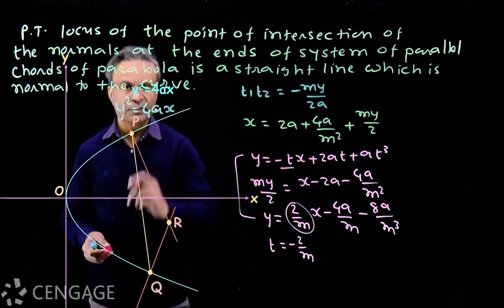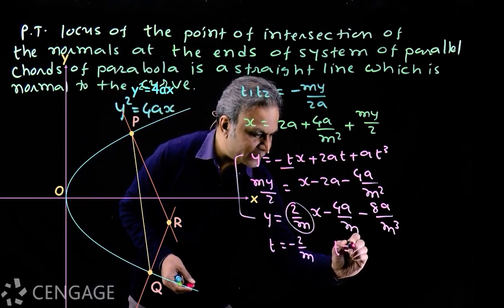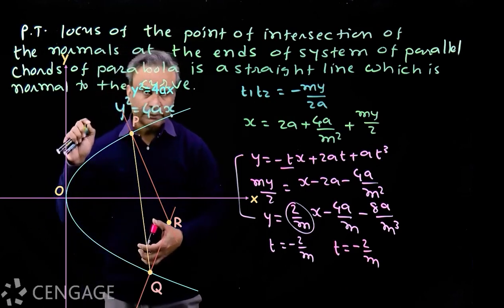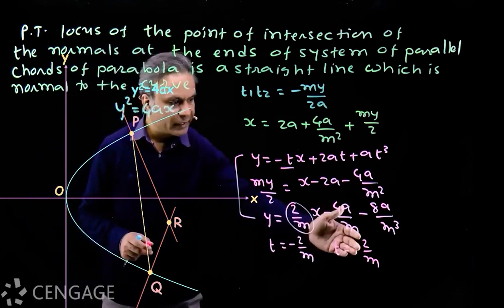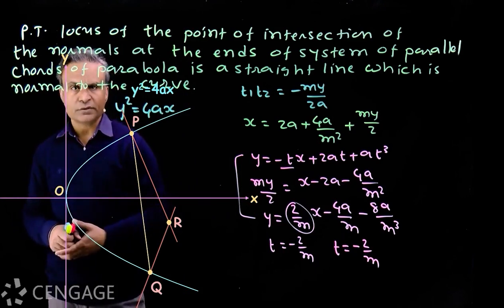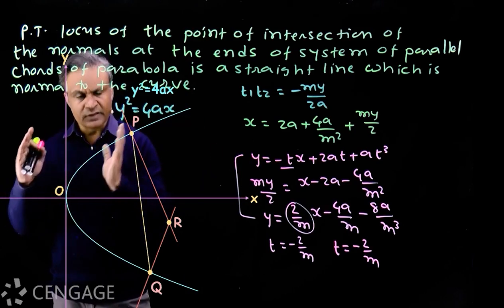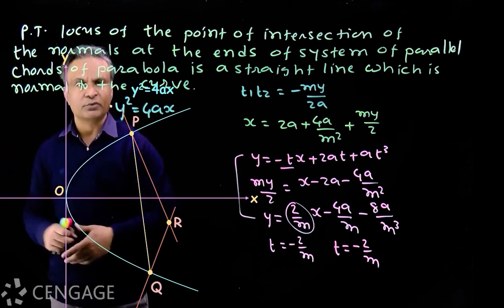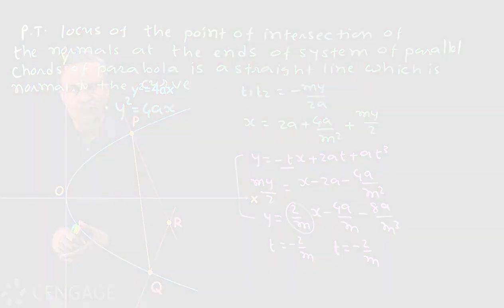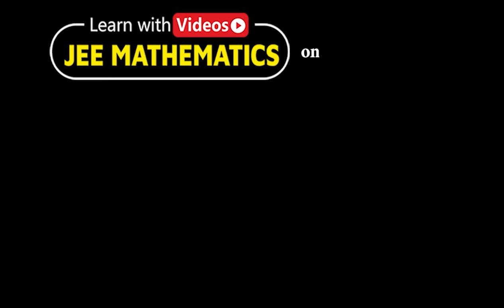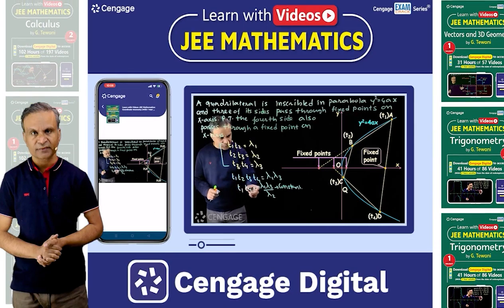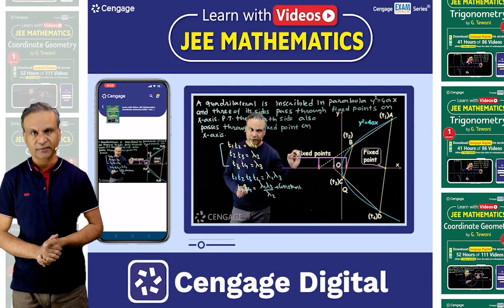So this is the equation of the normal to the parabola at the point whose parameter t is −2/m. This confirms the locus is indeed normal to the parabola. A logical recap: we have a system of parallel chords — when we consider one system of parallel chords we fix the slope m, and the key fact used is that t1 + t2 = 2/m, which is constant because slope is constant.